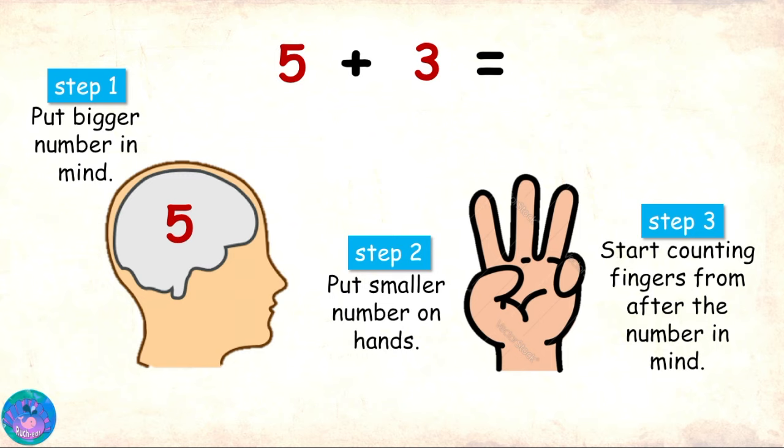Step 3 is to start counting the raised fingers from after the number in mind. In mind, we have 5. So, 6, 7, 8. Therefore, the answer of 5 plus 3 is 8.